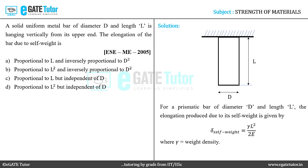When you look at this expression, the elongation of the bar due to self-weight is directly proportional to L squared and it is independent of its diameter.